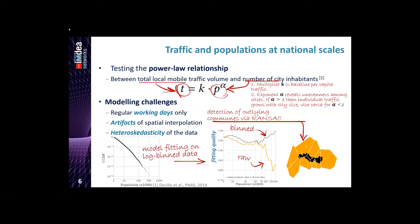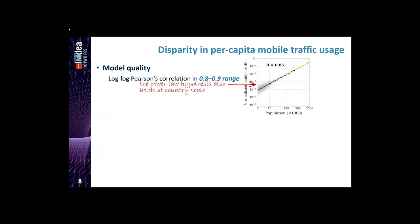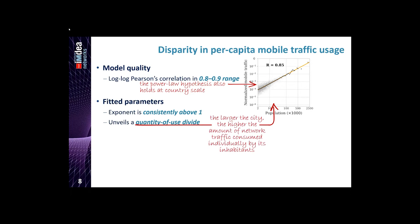Once we fit the binned data we got our results and parameters. Looking at the Pearson correlation values for different experiments, which range between 0.8 and 0.9, we can clearly say our power law hypothesis holds true even at country scale. We always find that the value of alpha is greater than 1 in all experiments, which tells us there is a quantity-of-use divide or second level divide. This means inhabitants in big cities consume more traffic than those in small cities. Quantitatively, people in a city of 1 million population consume twice the traffic of people in a city of 10,000 population.